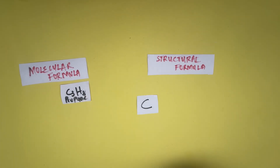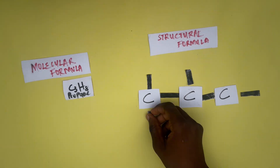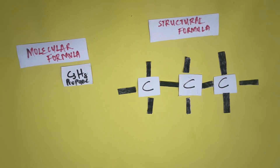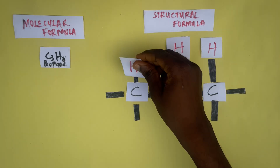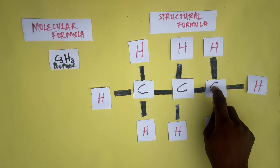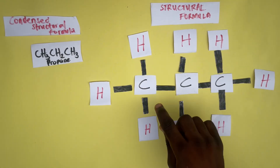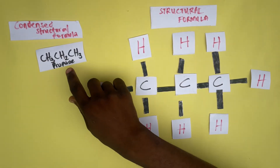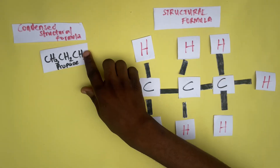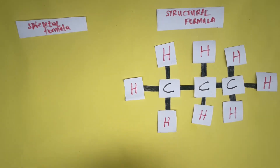Let's write the structural formula for propane. There are three carbons — let's write them down and place the single bonds around them. For the eight hydrogens, let's place them: one, two, three, four, five, six, seven, eight. The next representation is the condensed structural formula. For the first carbon with three hydrogens you write CH3, for the second carbon with two hydrogens you write CH2, and for the last carbon with three hydrogens you write CH3.